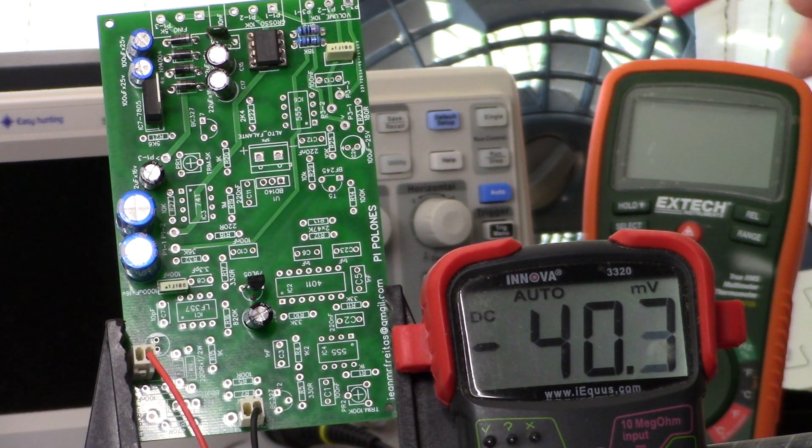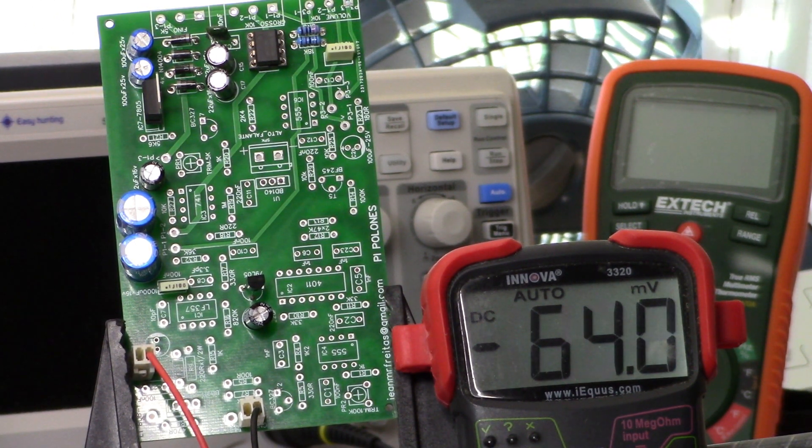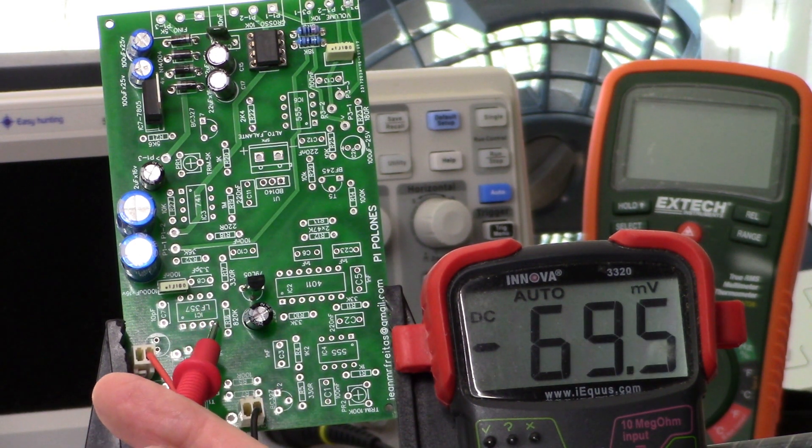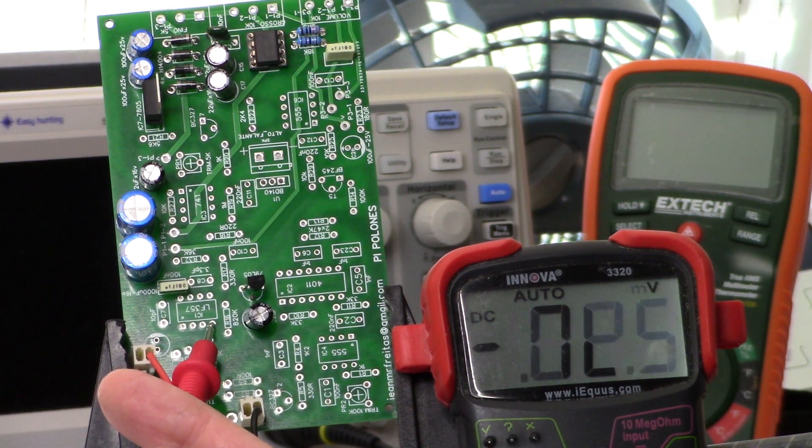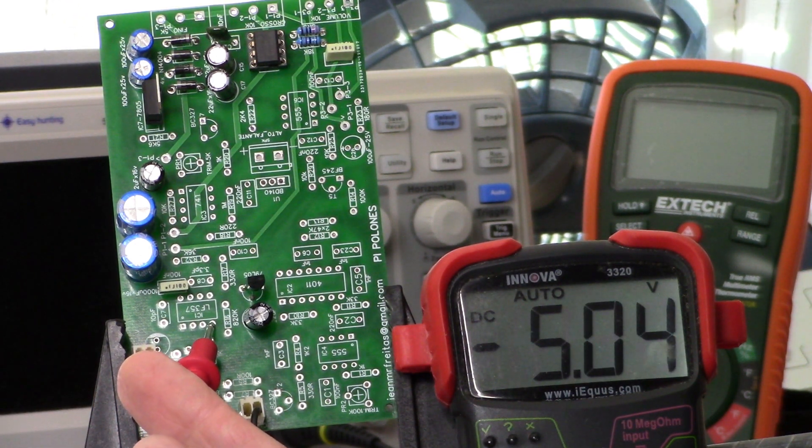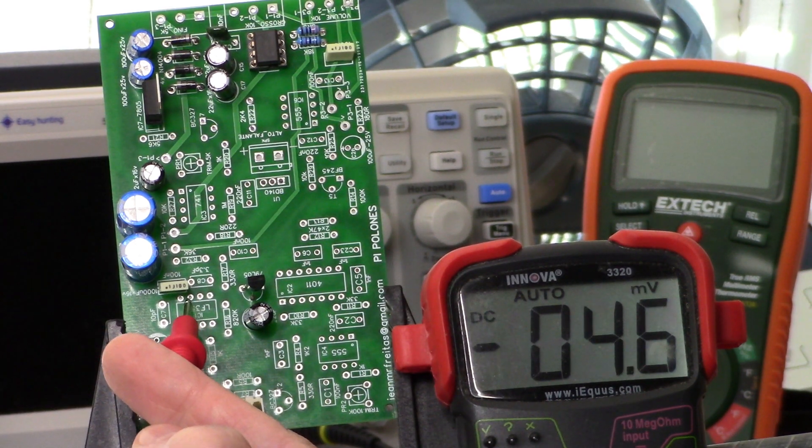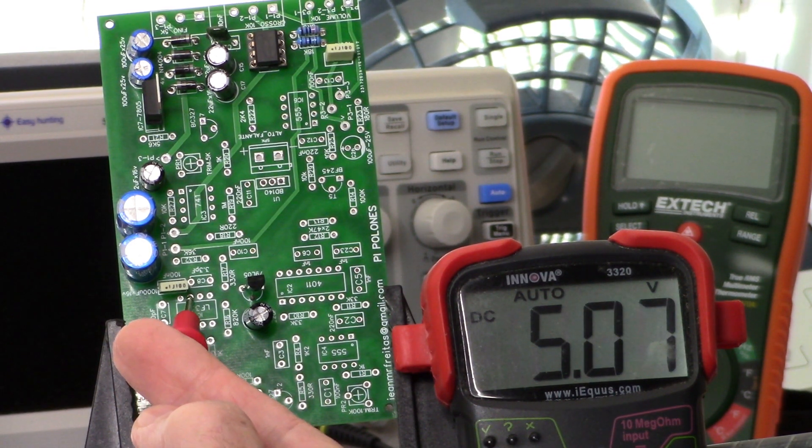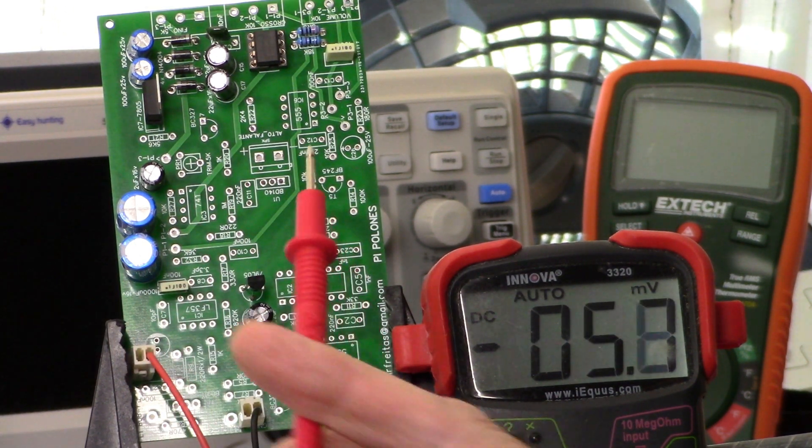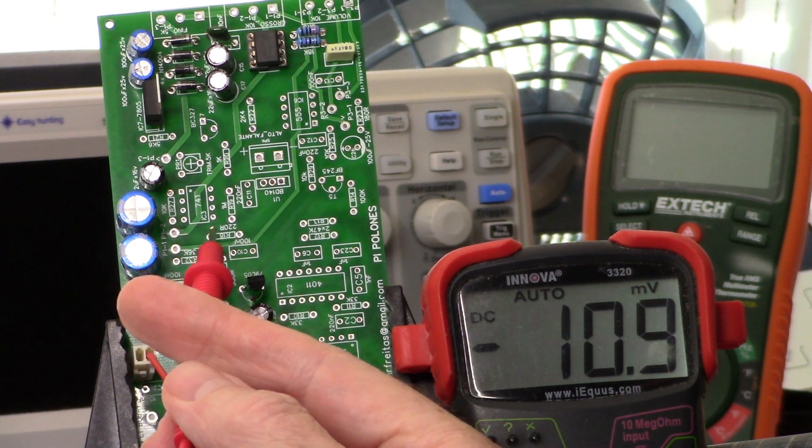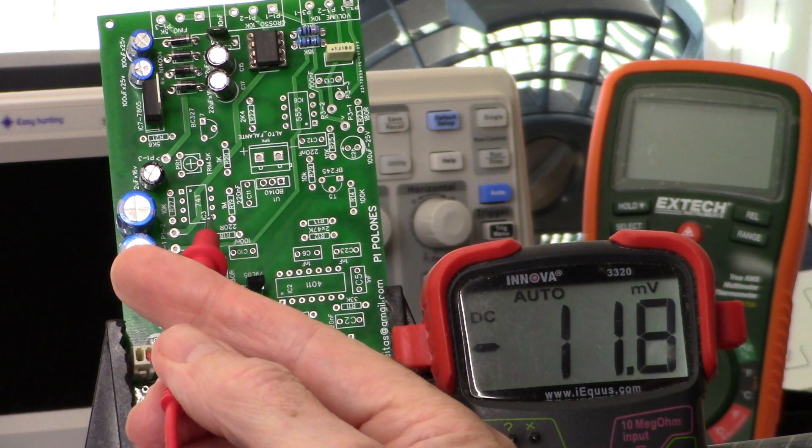Okay, so we are going to check the plus and negative voltage supply. I'll try to do this keeping my hand out of the way here. We got negative 5 volts on IC1, that's pin 4, so that's negative 5, and positive 5 volts on pin 7.